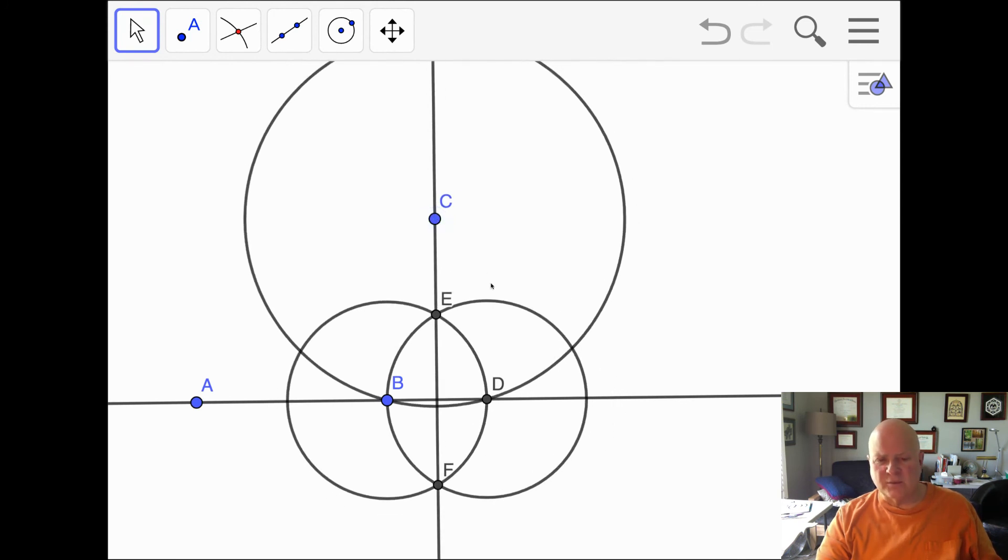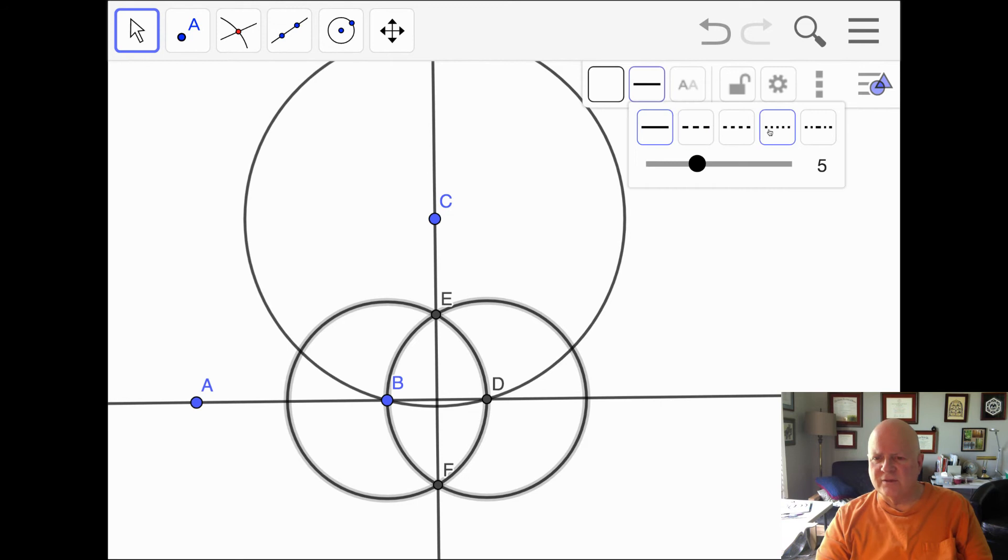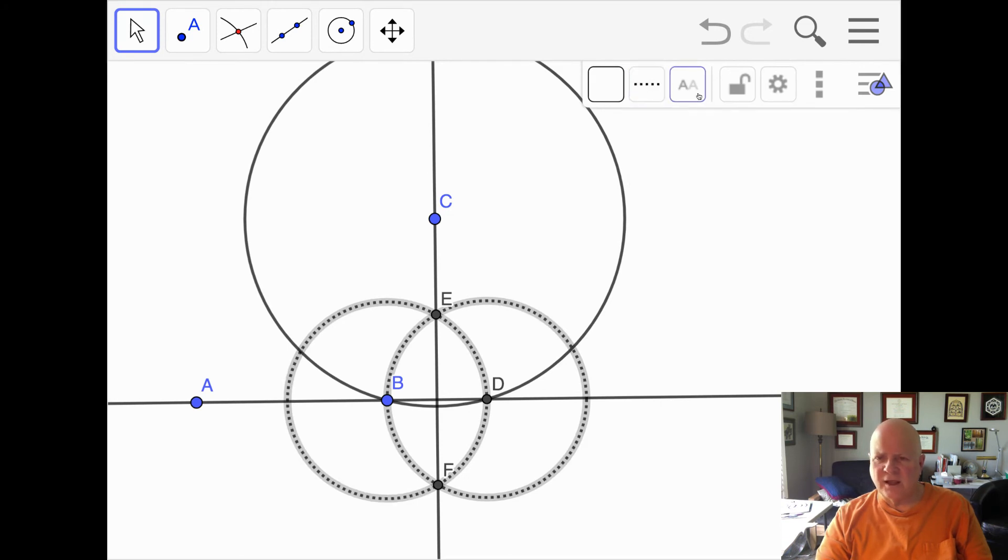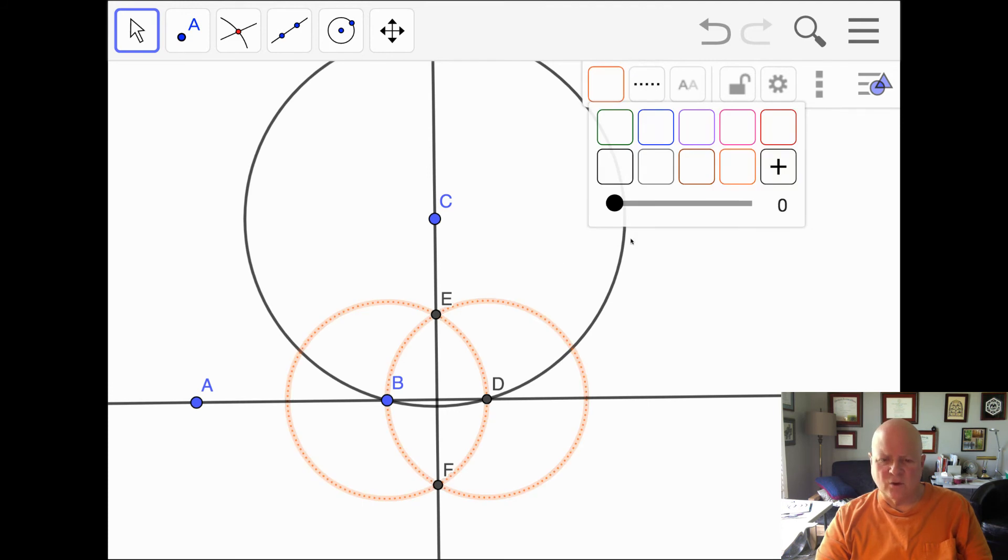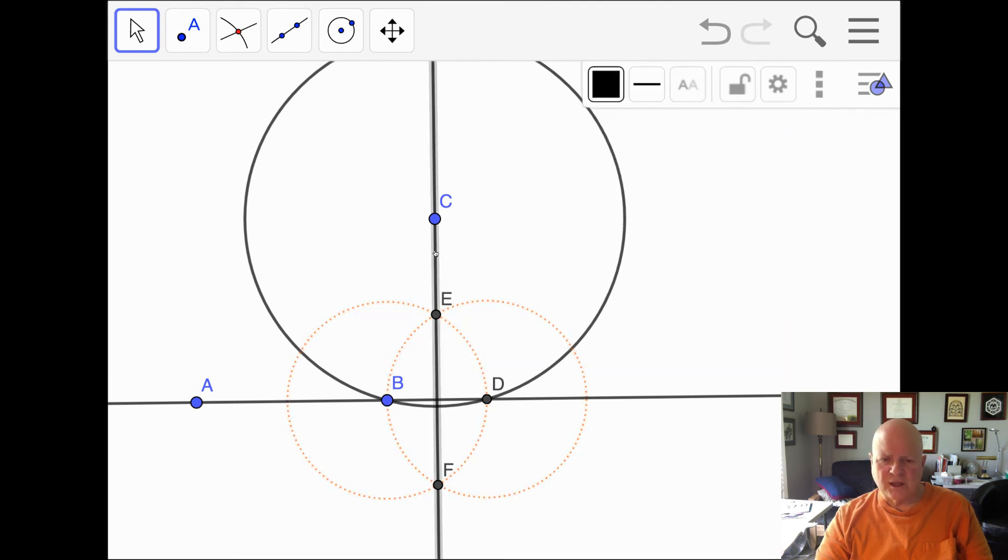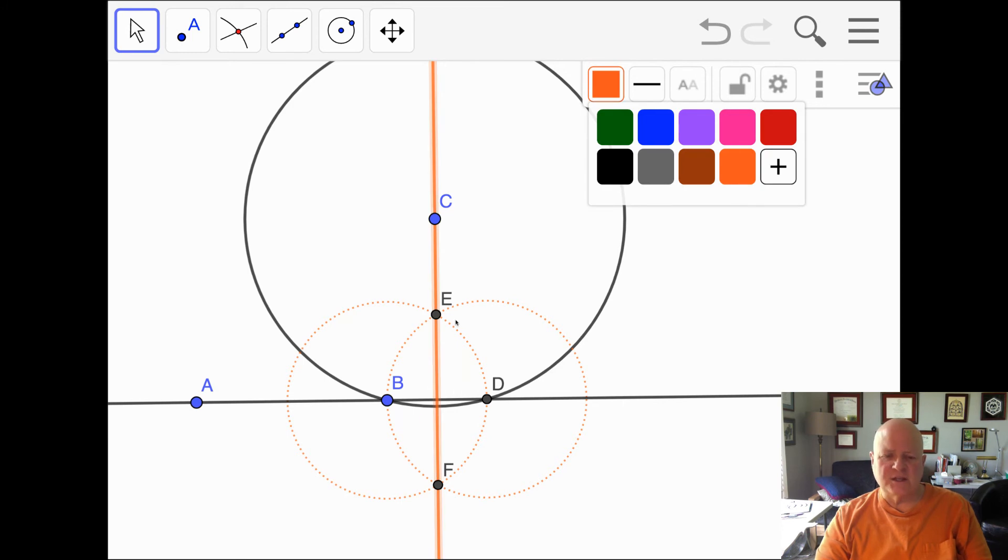Now I will make this a little bit clearer to see. I hope it's clearer to see by changing maybe the style of this, maybe making it dotted and maybe making it a little bit less big and even making it a different color, making it orange. I'll make this line which is the perpendicular bisector orange because it's connected to these two circles.